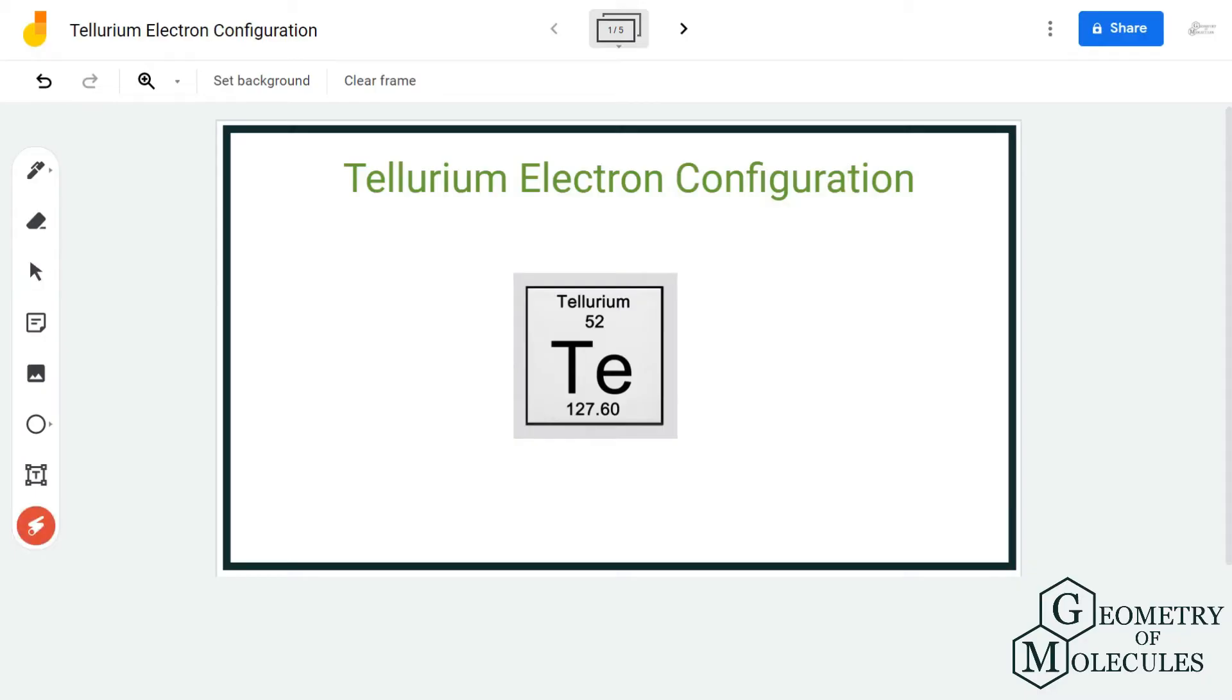Hi guys, welcome back to our channel. In today's video we are going to help you determine the electron configuration of tellurium atom. It has a chemical symbol of Te and an atomic number of 52.